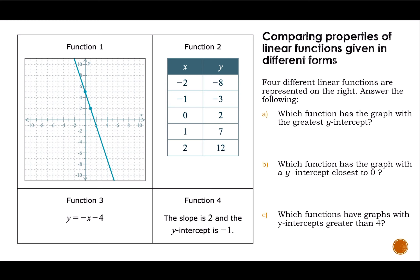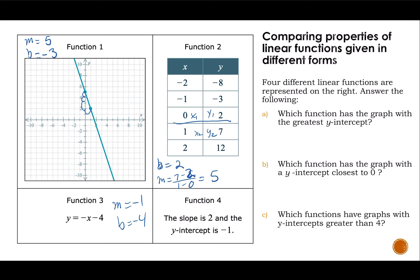Our last example. For function one, b is five and my slope is — going down three over one — so my slope is negative three. Function two has b equal to two, because that's when x is zero. Calculating the slope: seven minus two over one minus zero gives a slope of five. For function three, my slope is negative one and my y-intercept is negative four. For function four, my slope is two and my y-intercept is negative one.